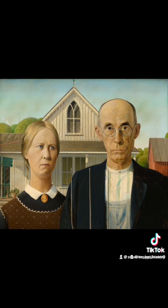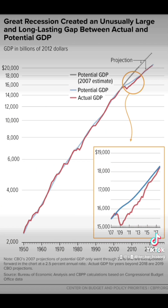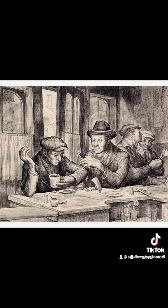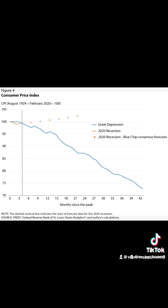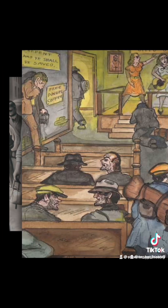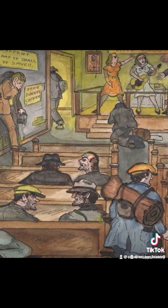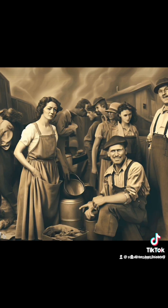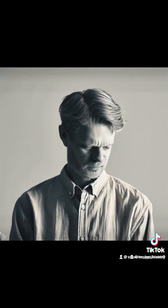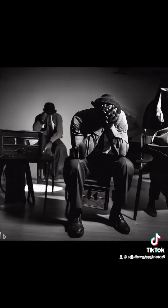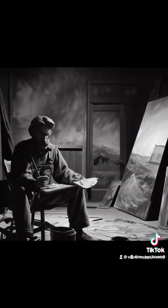The Great Depression was a severe economic downturn that began in the late 1920s and lasted throughout the 1930s. Its origins can be traced back to several key causes. Firstly, stock market speculation in the 1920s led to an unsustainable economic bubble. Easy credit and speculative investing led to inflated stock prices and a false sense of prosperity. However, in October 1929, the stock market crashed, wiping out billions of dollars in wealth and triggering a financial panic that spread like wildfire.